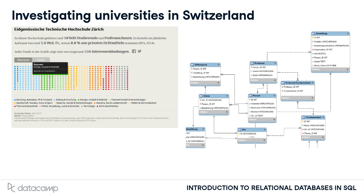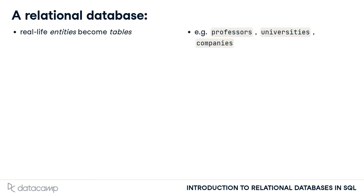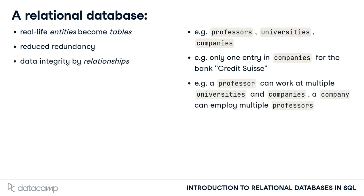All these rectangles were turned into database tables. But why did I use a database? A database models real-life entities like professors and universities by storing them in tables. Each table only contains data from a single entity type. This reduces redundancy by storing entities only once — for example, there only needs to be one row of data containing the details of a certain company. Lastly, a database can be used to model relationships between entities.